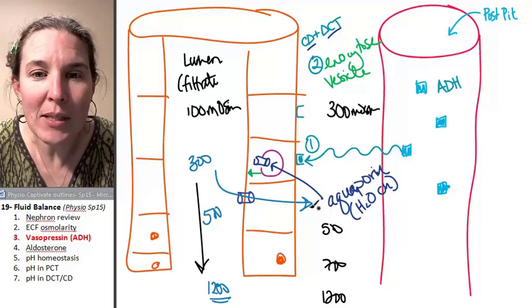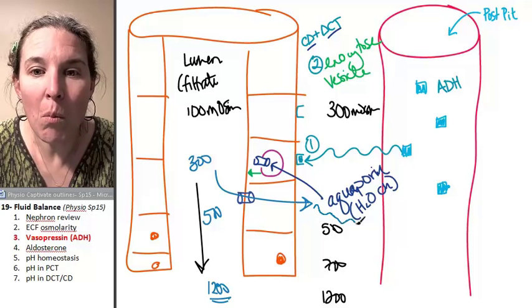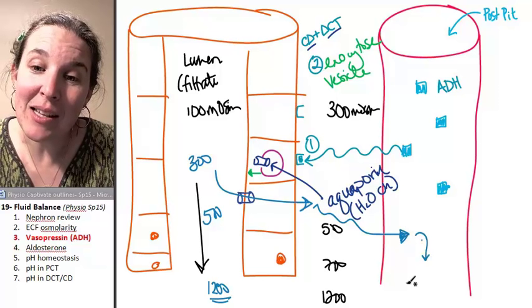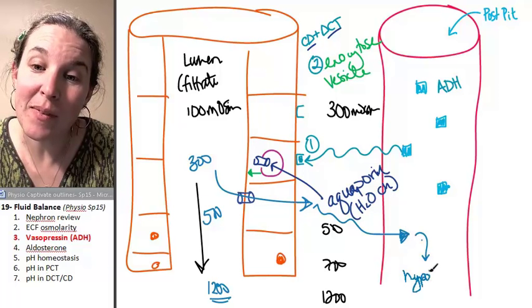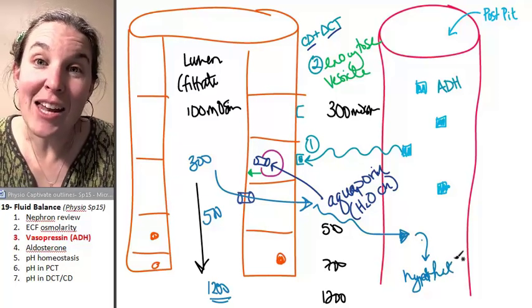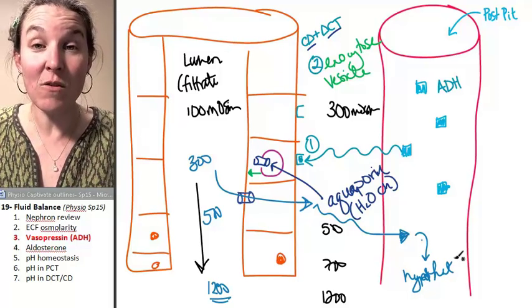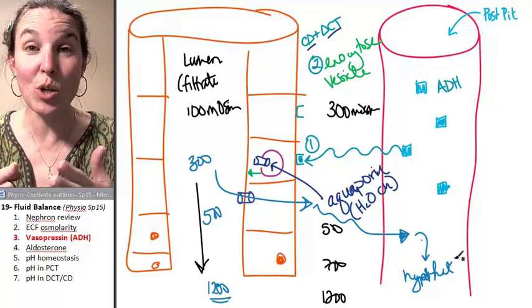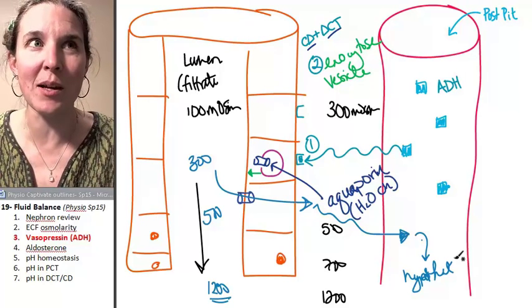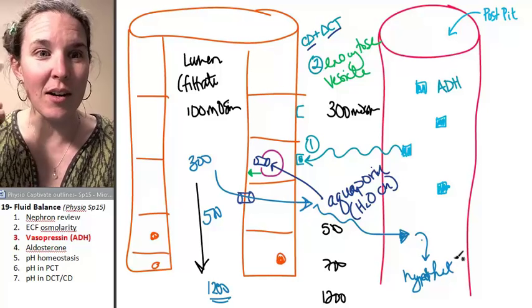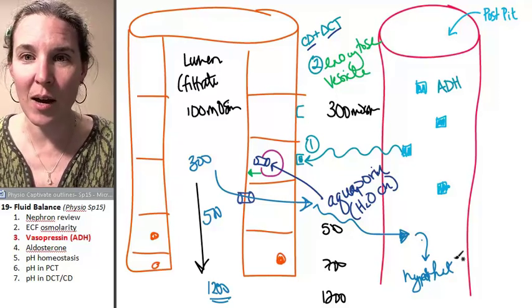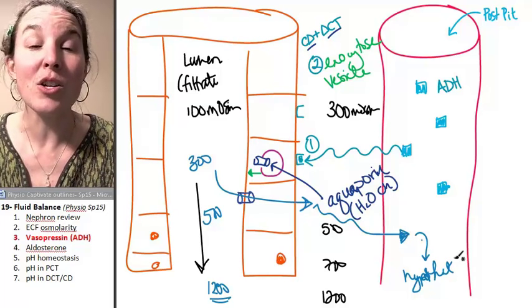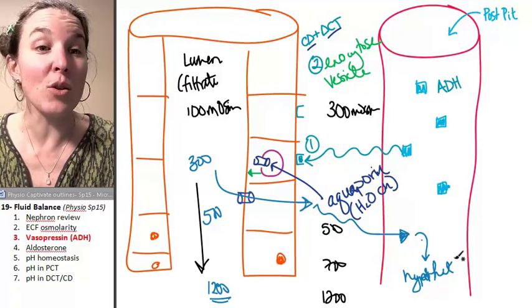And then what happens to all that water? It goes back into the blood, and then it goes back to the hypothalamus. And you just increased the volume of water in the blood, which is going to cause those little osmoreceptors to stretch, which means they're going to send the message to the hypothalamus saying, dog, you did your job. We're cool.